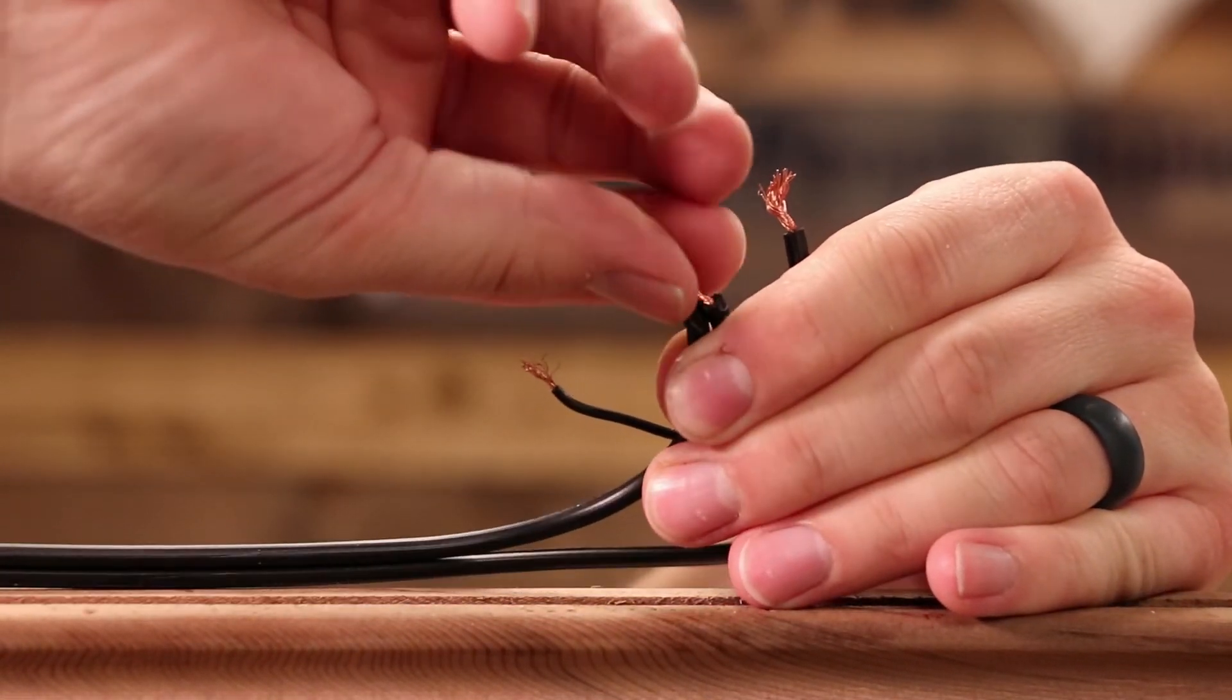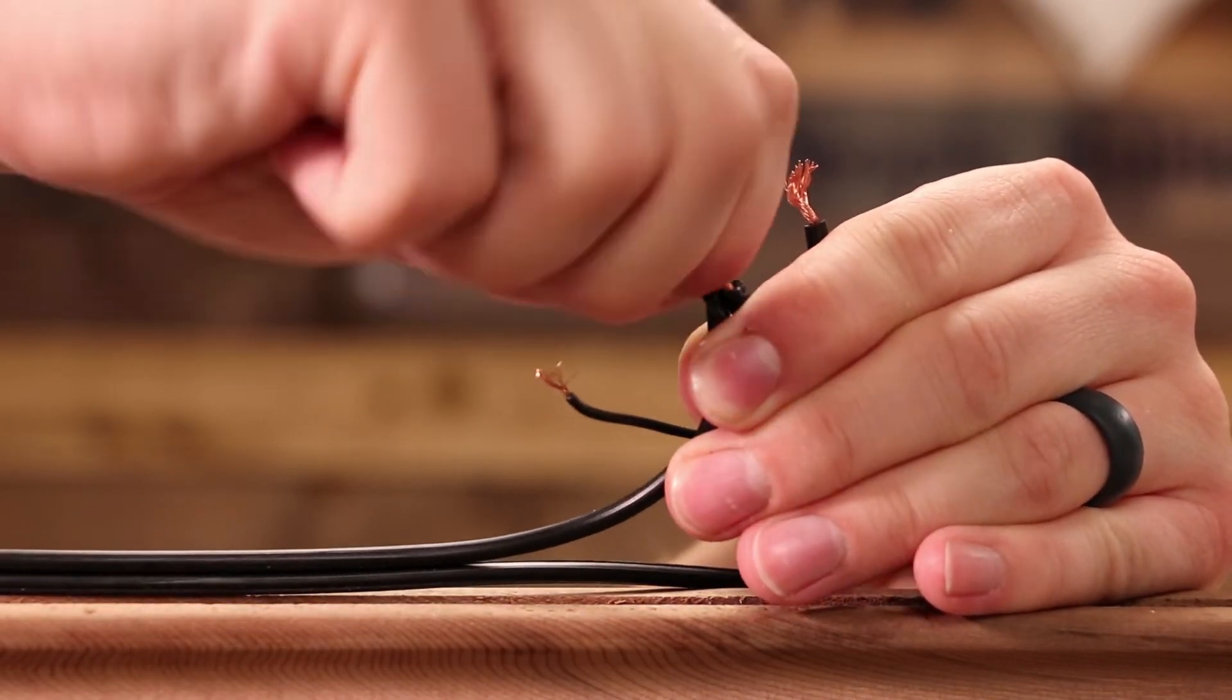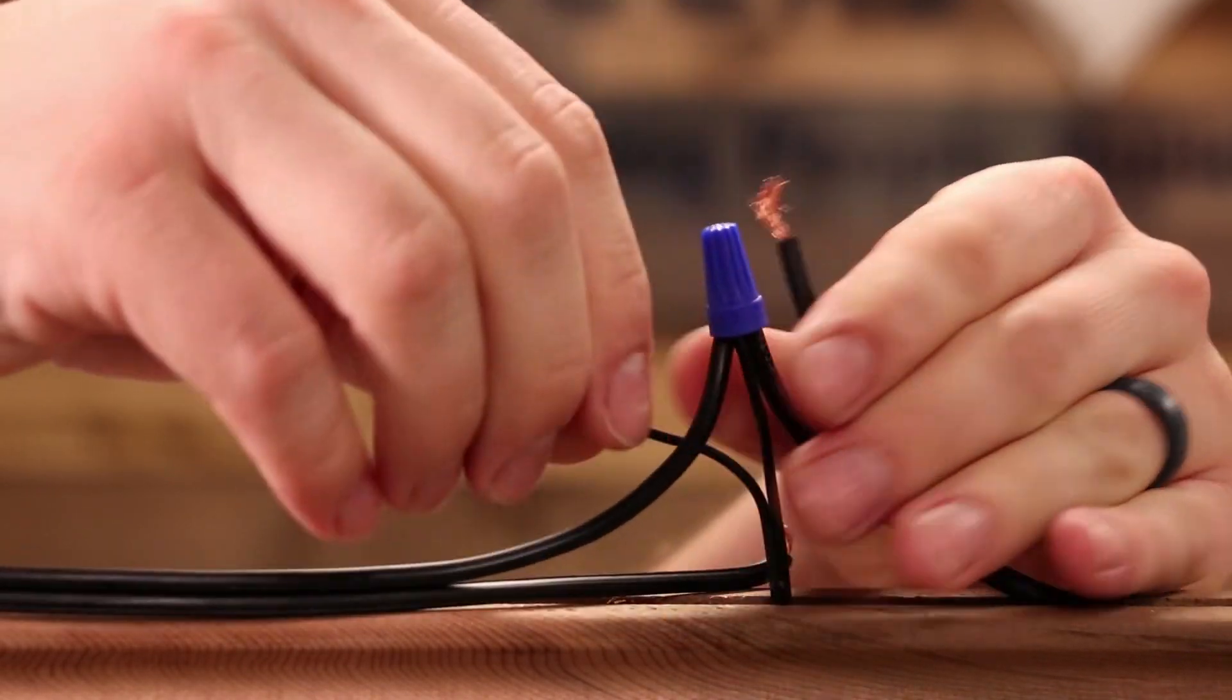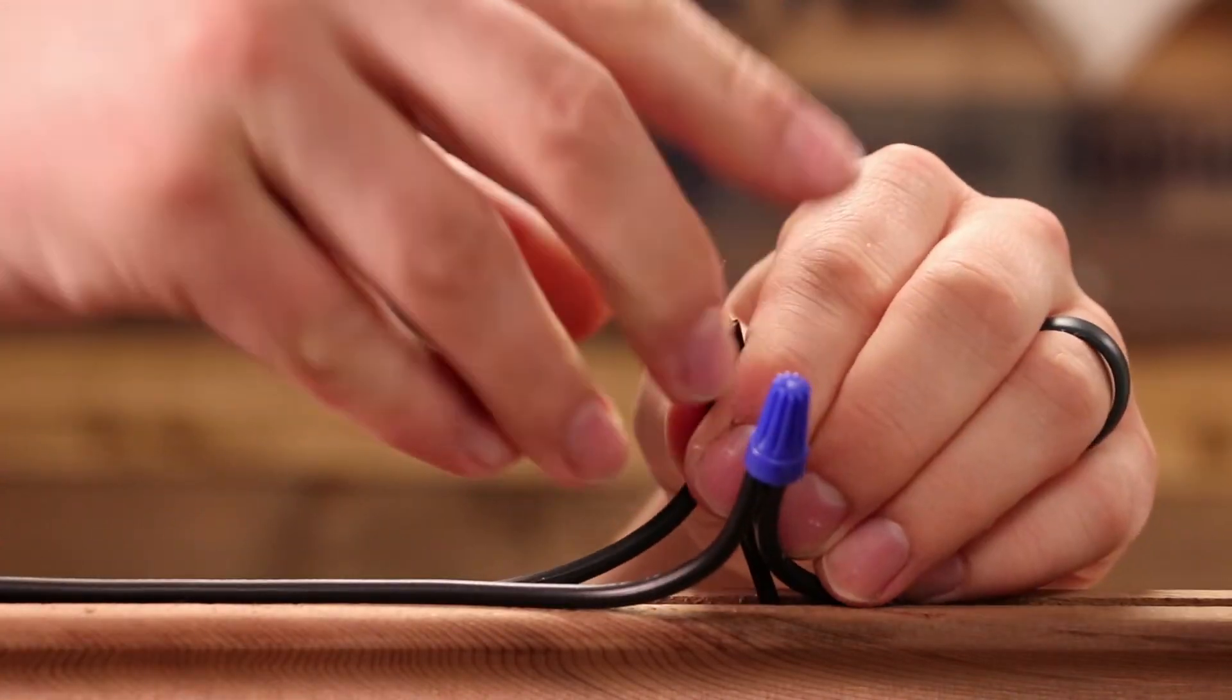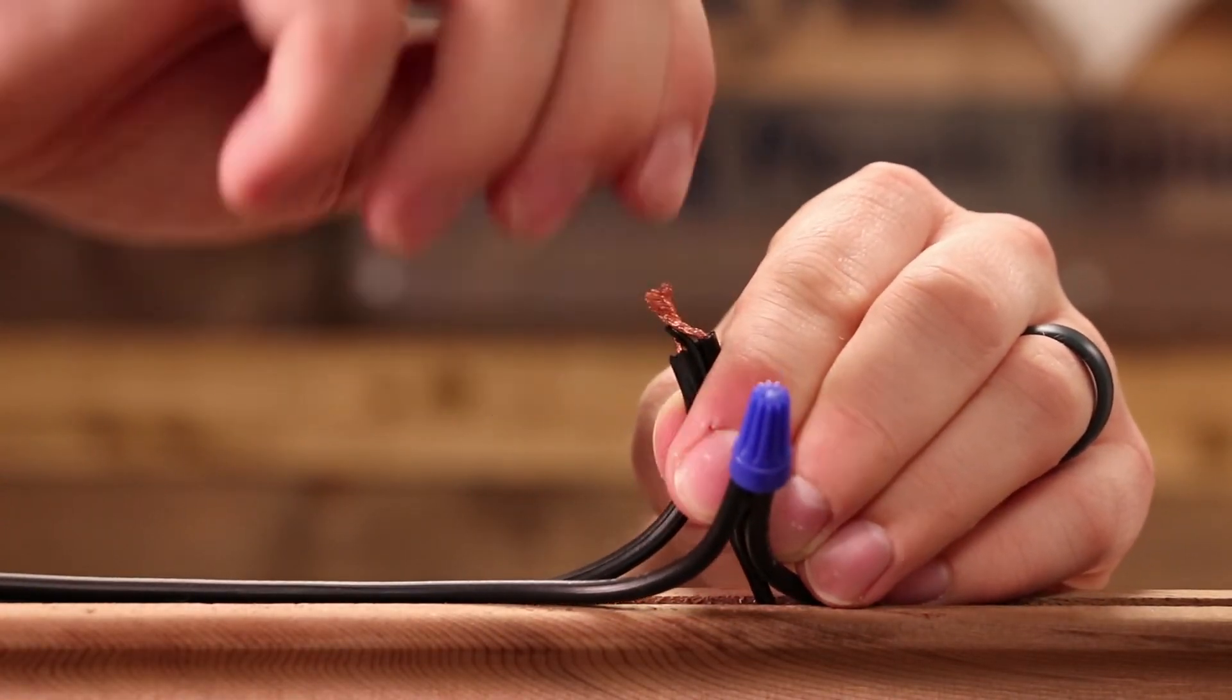Next, take one wire from each light fixture and its counterpart from the main run of wire. Hold the two wires together with the ends even and connect with a wire nut until tight. Don't over-twist the connection. Now repeat for the second set of wires.